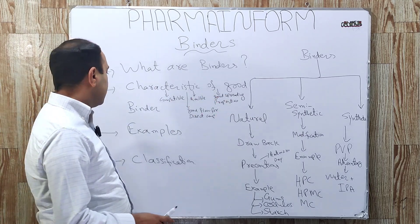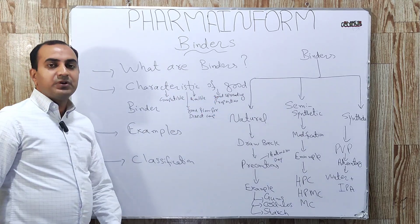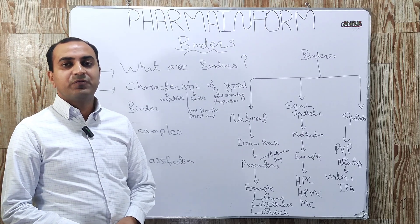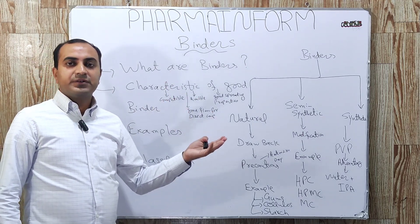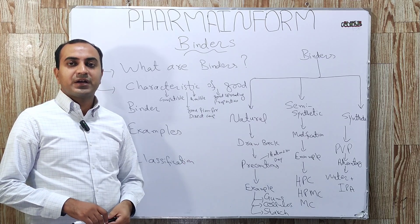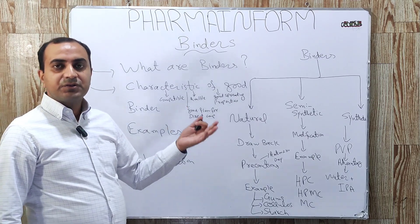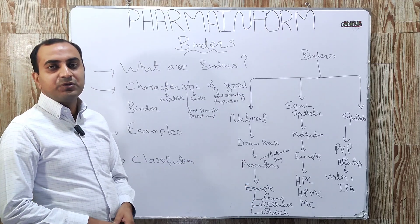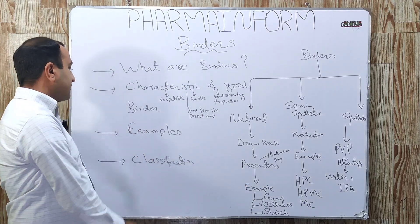Next are the examples of binders used for solid dosage form manufacturing. Commonly used binders are gums such as tragacanth or acacia, starch, and cellulose. These are common examples of binders.